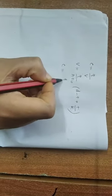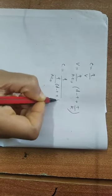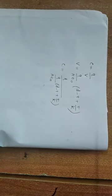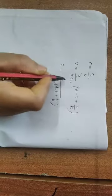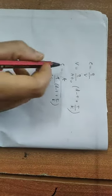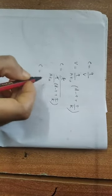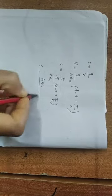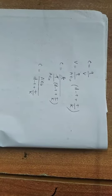Since C equals Q by V, we get C equals Q divided by (Q/Aε0)·(D minus T plus T by K). Cancelling Q, the capacitance is C equals Aε0 divided by (D minus T plus T by K). This is the expression for the capacitance of a capacitor when a dielectric slab is introduced between the two metal plates.